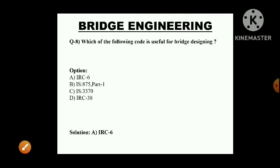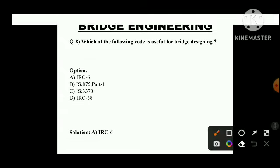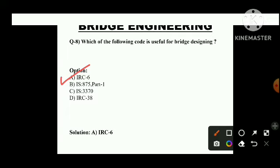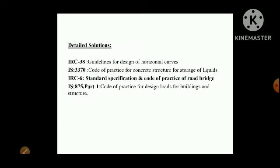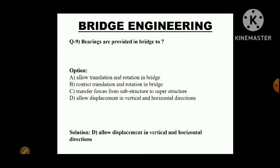Next question: Which code is used for bridge designing? The answer is IRC 6. It is also important to know other codes: IRC 38 is for guidelines for the design of horizontal curves; IS 3370 is the code of practice for concrete structures for the storage of liquids; IRC 6 is the standard specification and code of practice for road bridges; IS 875 Part 1 is the code of practice for design loads for buildings and structures.